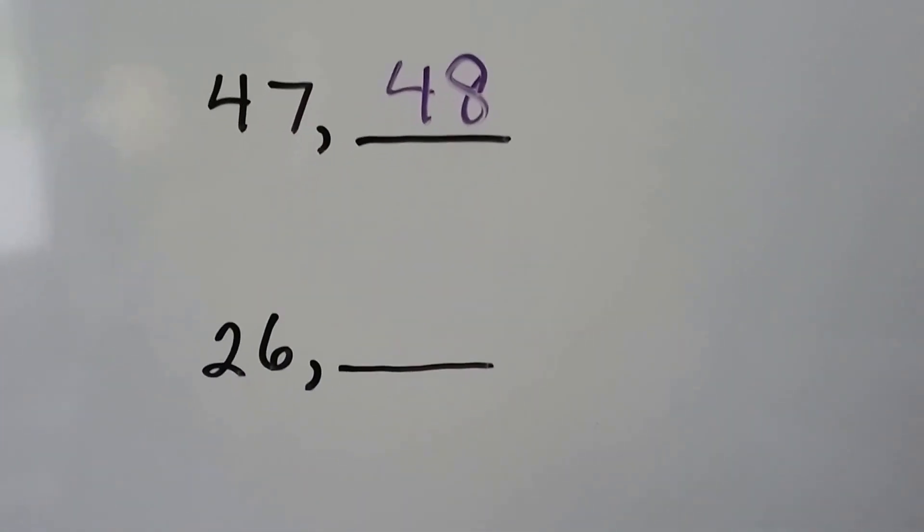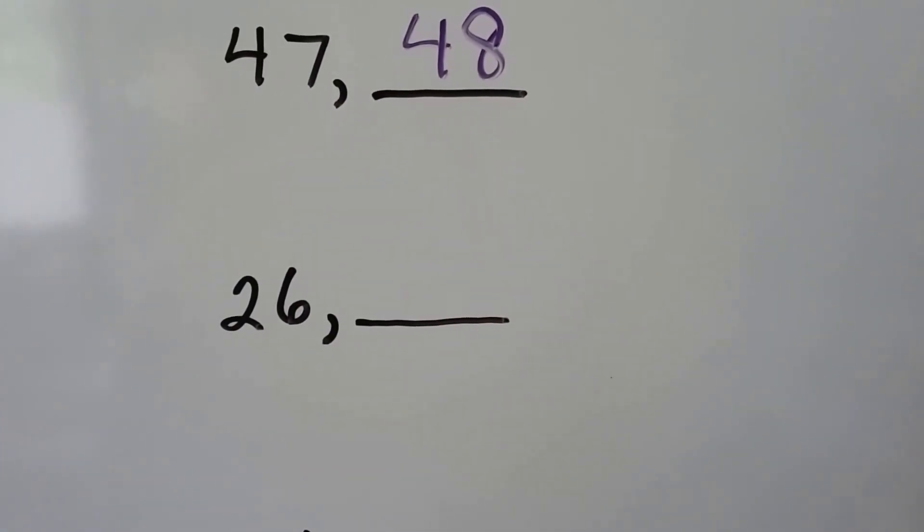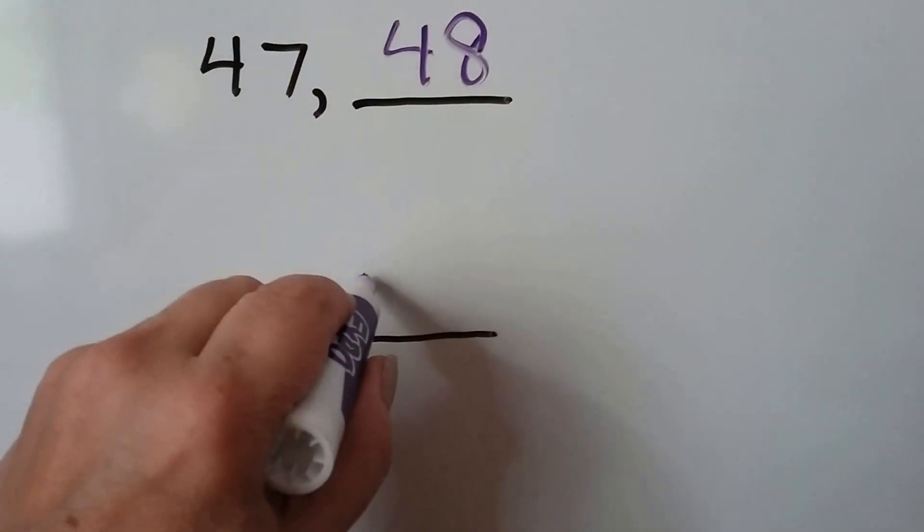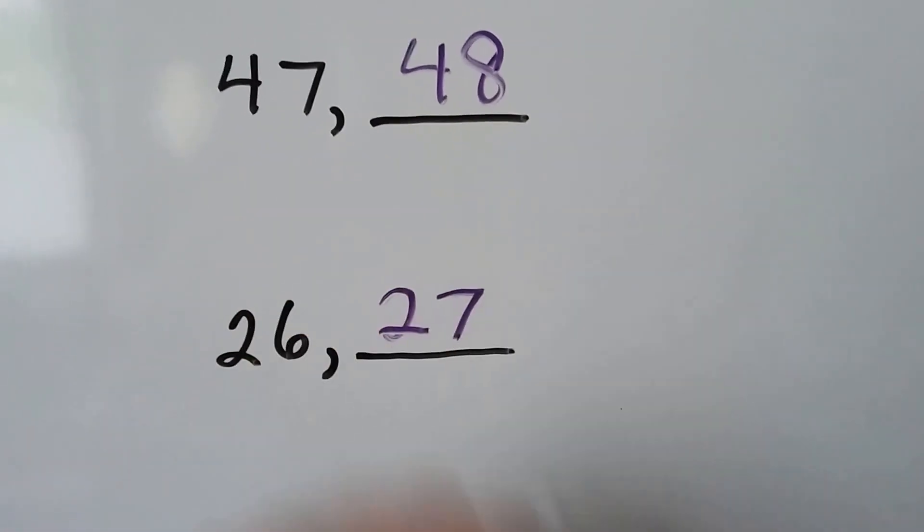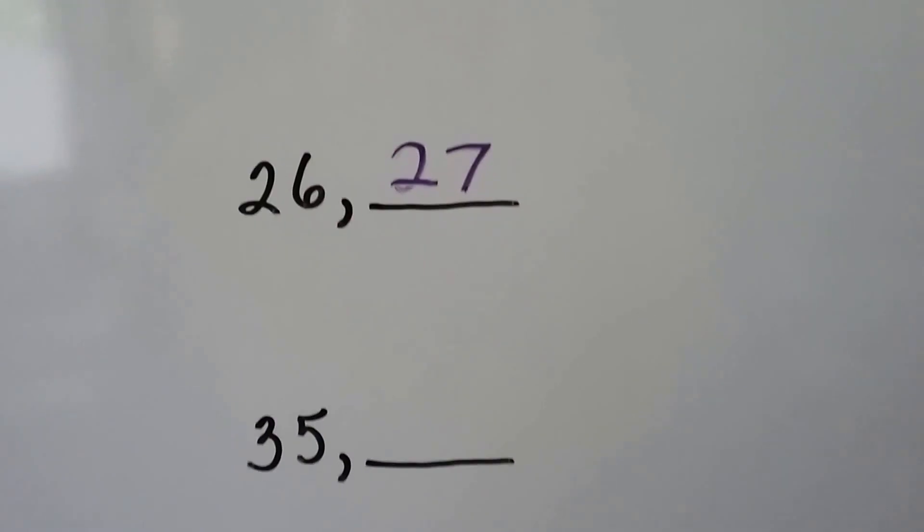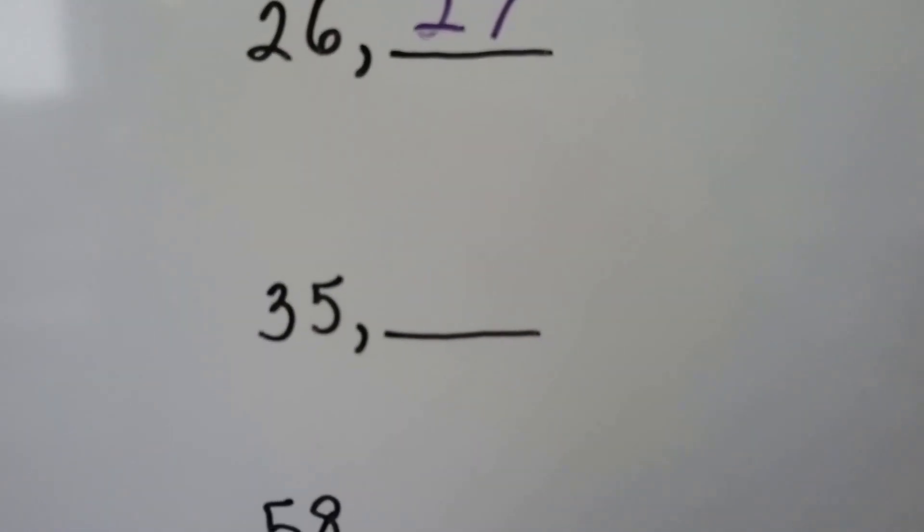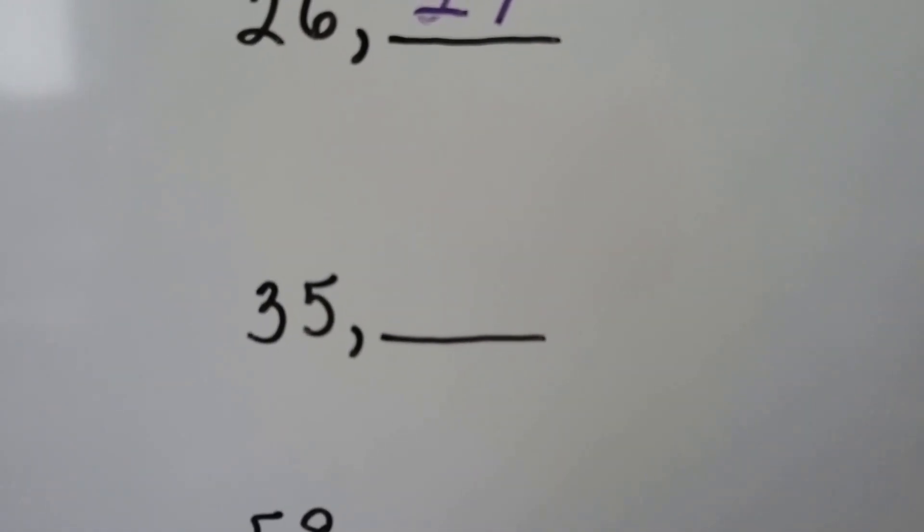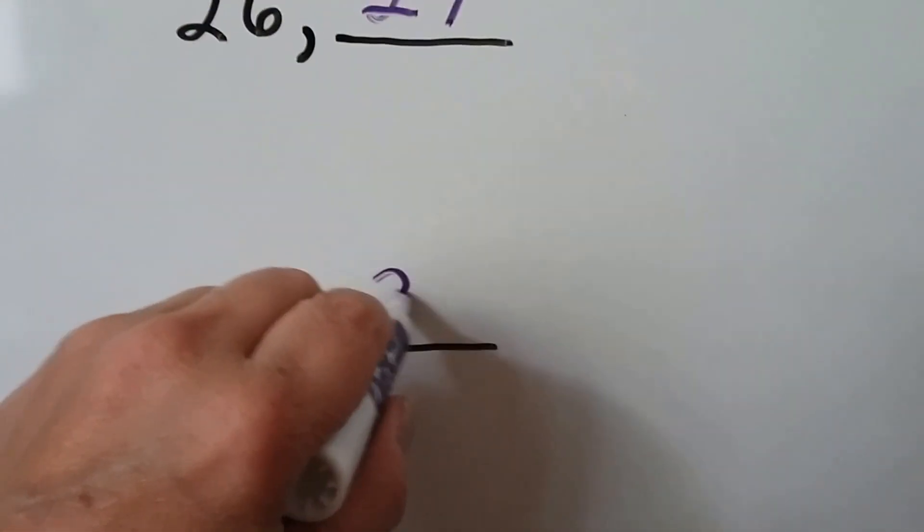What number comes after 26 when we count? 26. One more would be 27. What number comes after 35 when we count? 35, 36.